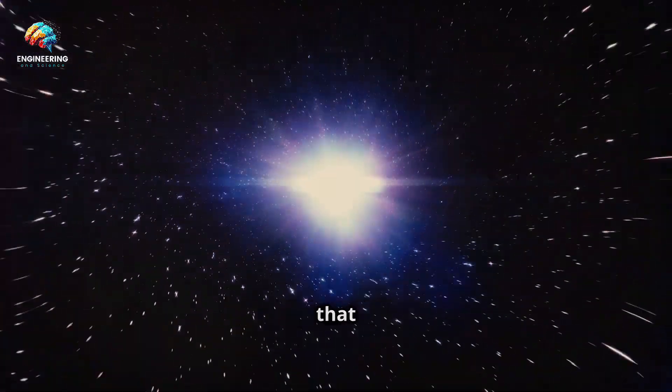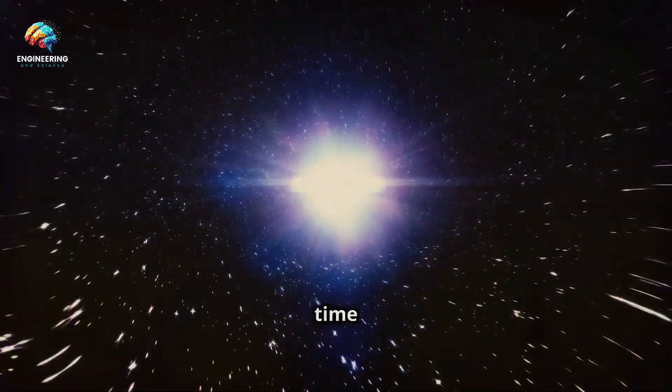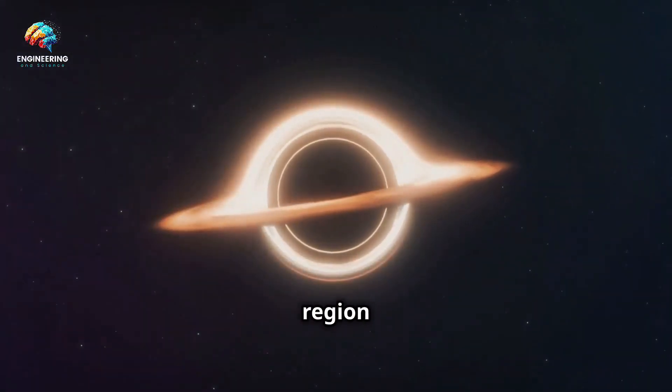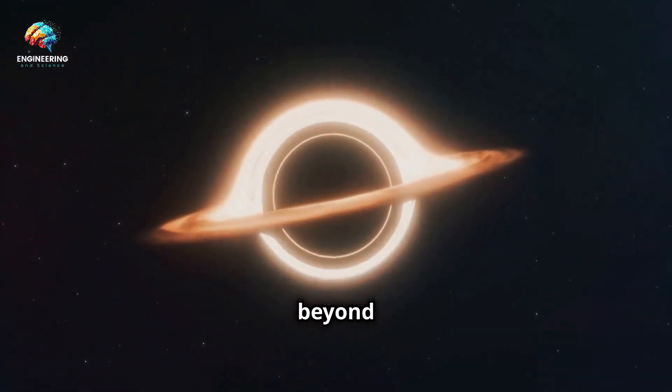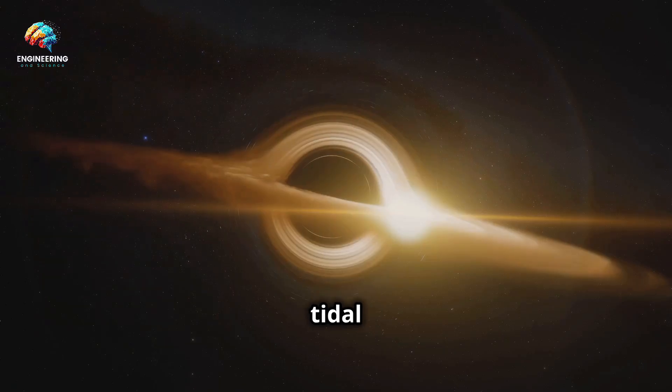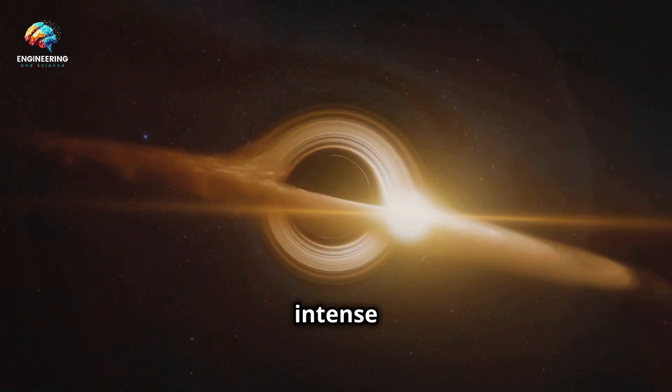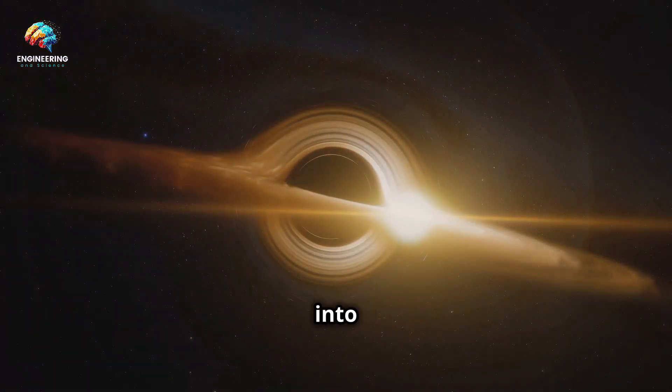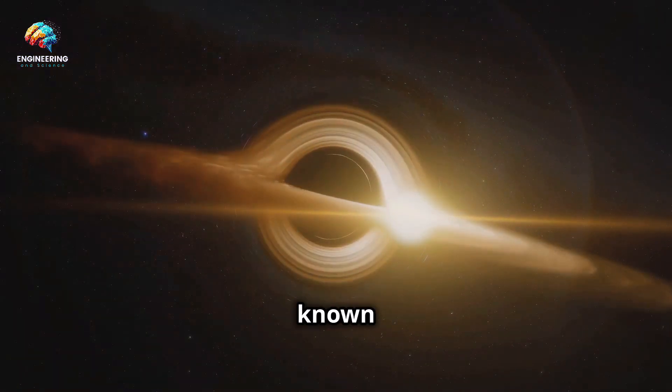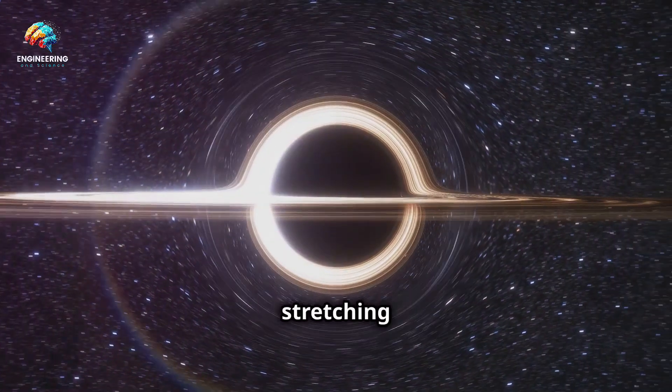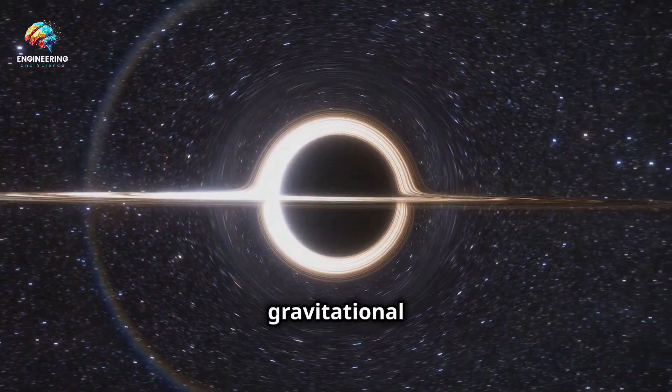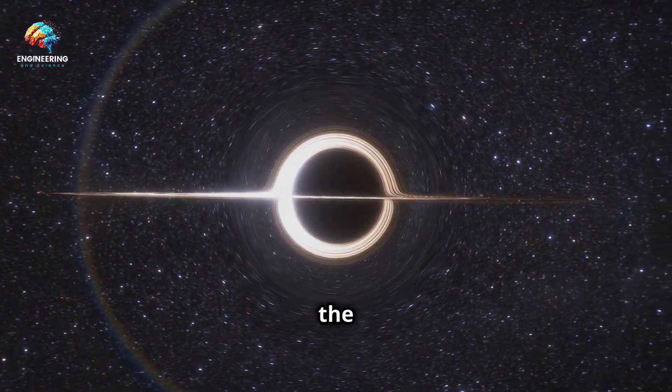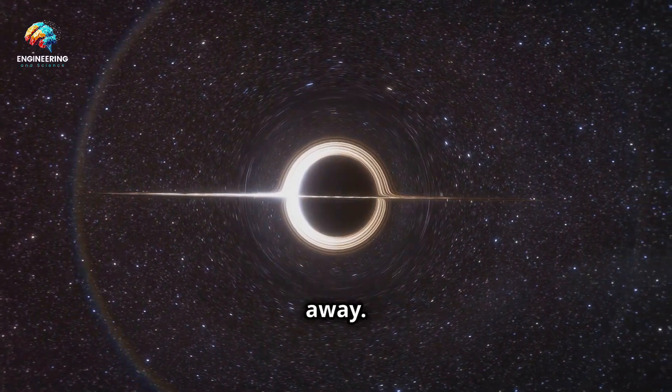These forces are so powerful that they can distort space and time itself, creating a region known as the Event Horizon, beyond which nothing can return. The tidal forces near a black hole are so intense that they would stretch an object falling into it like spaghetti, a phenomenon known as spaghettification. This stretching occurs because the gravitational pull is much stronger on the side of the object closer to the black hole, than on the side farther away.